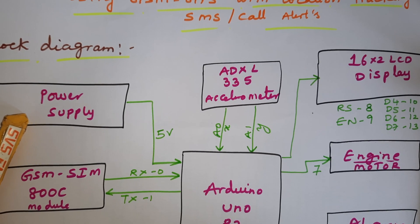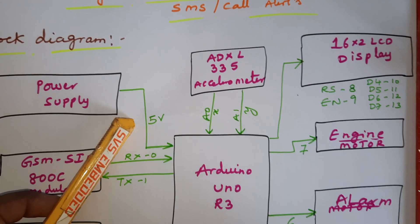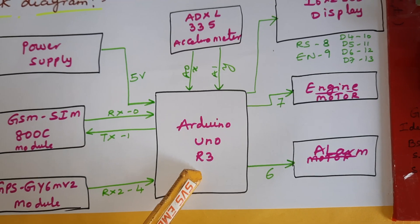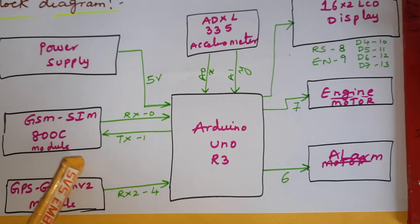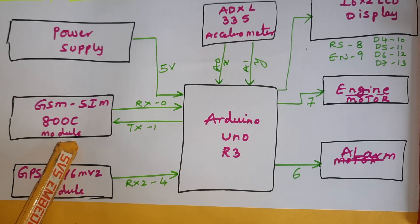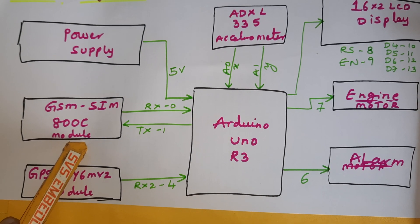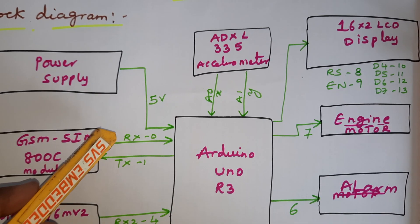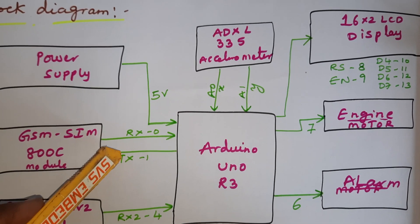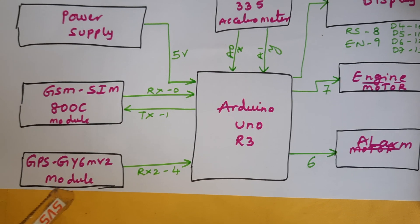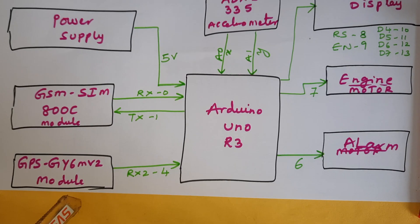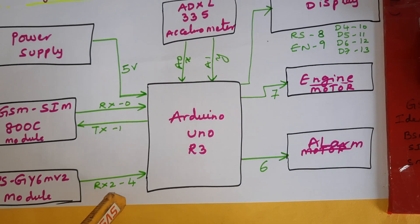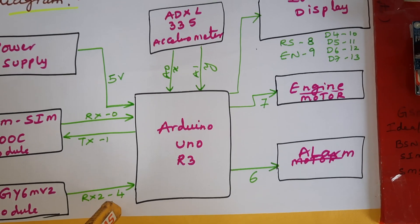In this project we are using a 10 to 9 volt adapter as the power source. It converts to 5 volts pure DC output and feeds the Arduino Uno R3 board. We are using the GSM SIM 800C module for SMS alert and call alert, connected to RX/TX pins 0 and 1.